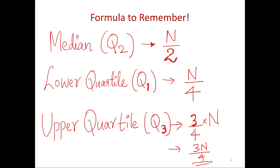For quick memory: if it's Q2 you are going to find, divide N by 2. If it's the upper quartile, remember the 3 — it's Q3, so it's 3N over 4.